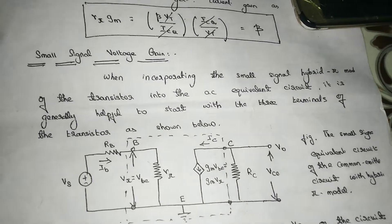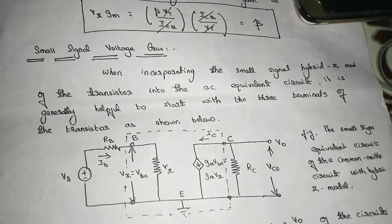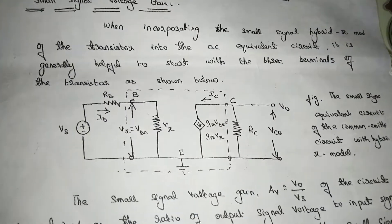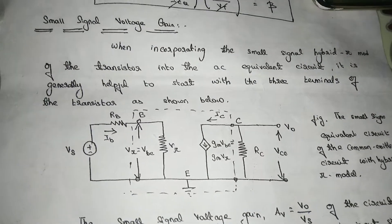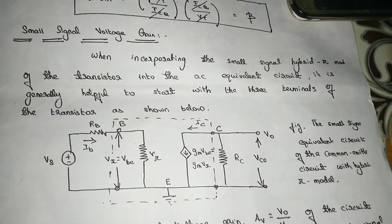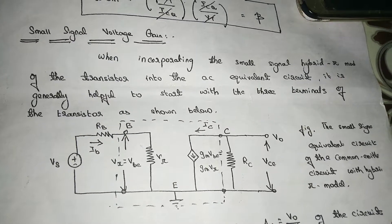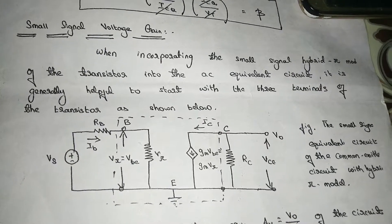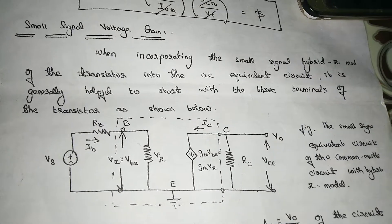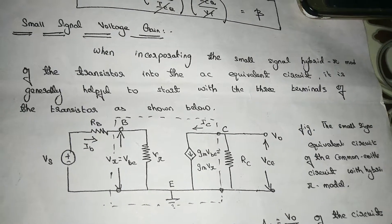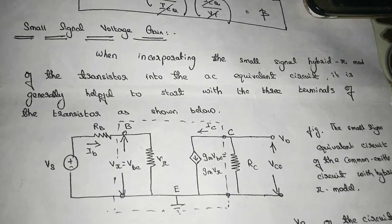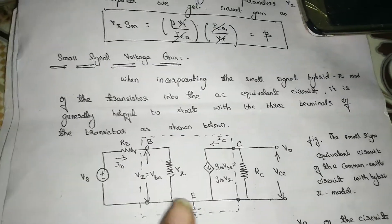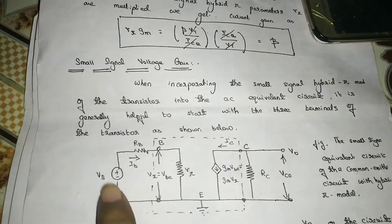Now, it is about the small signal voltage gain. What is voltage gain? Output voltage by input voltage. That voltage gain is denoted by A sub V. So, if voltage gain is denoted, input is Vpi, input Rpi is the resistance. We find out the output voltage V0 by input voltage Vs.